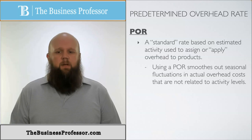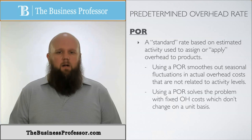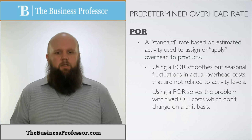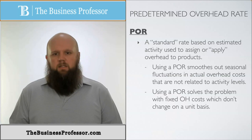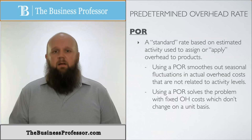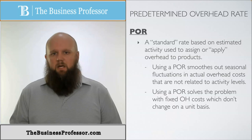Using a POR smooths out the seasonal fluctuations in actual overhead costs that are not related to activity levels. Using a POR also solves the problem of fixed overhead, which doesn't change on a unit basis. This is a way to keep everything flat so there are not a lot of fluctuations. POR is very necessary for job-order costing, or any time we're applying manufacturing overhead to a job or even a process.